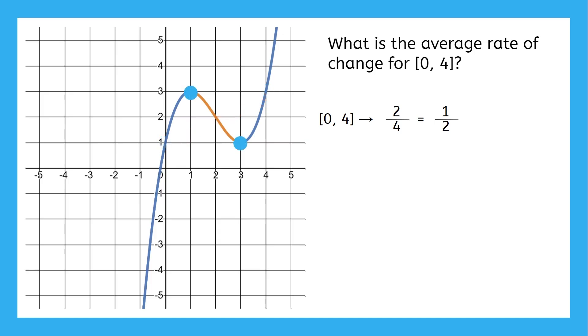For instance, if we find the average rate of change on this decreasing interval, from one to three, we get negative one. If we connect the endpoints with a line, the slope of that line very closely approximates the function, much better than on the interval from zero to four.